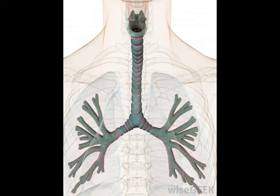The bronchial tree provides a system for the trachea to service the lungs. It is important to note, however, that like the trachea, it does not include the lungs. The bronchial tree begins with the primary bronchi and ends with the alveoli.